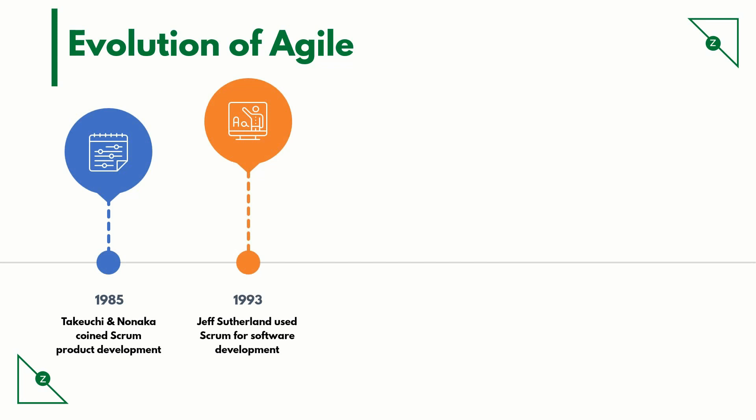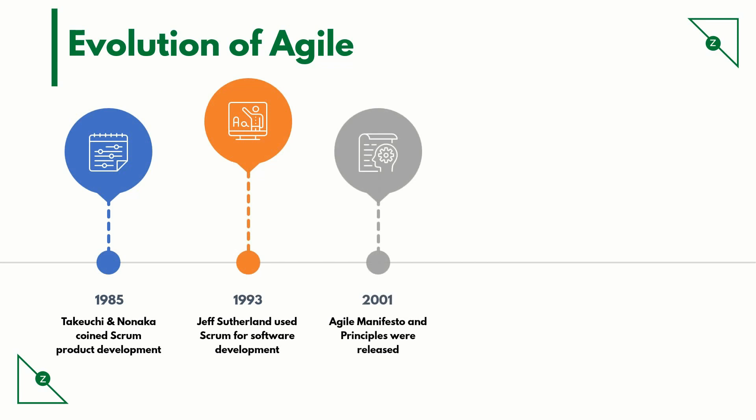In 1993, Jeff Sutherland used Scrum for software development. Jeff Sutherland is one of the creators of the Scrum software development process. In 2001, the Agile Manifesto and principles were released. In 2002, the Scrum Alliance was founded — a member-driven non-profit certifying body in the Agile space.